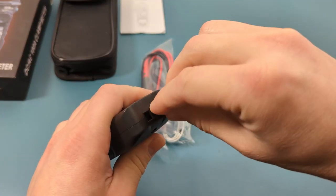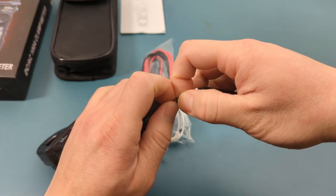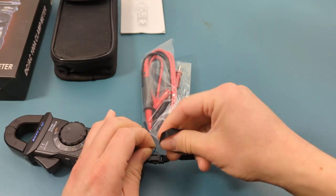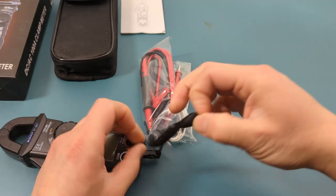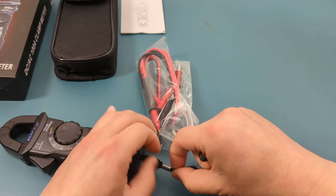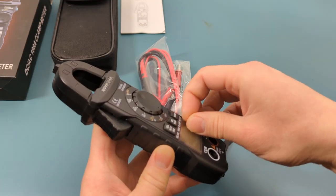Connect the strap to the bottom of the meter. Remove the plastic film from the display.